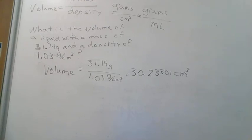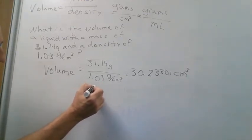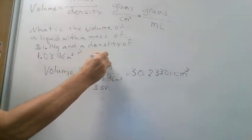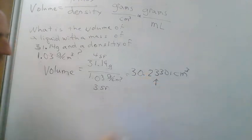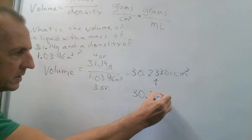If you're having trouble figuring out which unit goes where: mass will always be in units like grams or kilograms; density is a compound unit like grams per cubic centimeter or grams per milliliter; and volume will be in milliliters or cubic centimeters. Now for significant figures: the density 1.03 has a captive zero, giving three significant figures; the mass 31.14 has four significant figures. So we round to three significant figures. The fourth digit is less than five, so we make no change. Our final answer is 30.2 cubic centimeters.